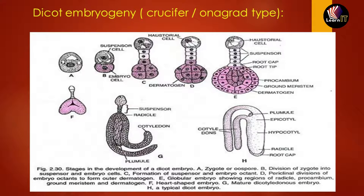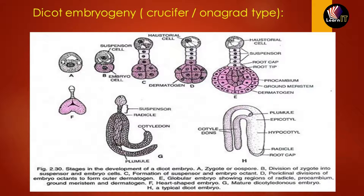The first cell of the suspensor is called the haustorium and the last cell, which is toward the embryo cell, is called hypophysis — it will form the radicle. The embryo cell divides twice vertically and once transversally to produce a two-tiered eight-cell embryo. The epibasal tier forms two cotyledons and a plumule; the hypobasal tier, near the suspensor, produces two hypocotyls. Initially it is globular, but after some time it becomes heart-shaped.